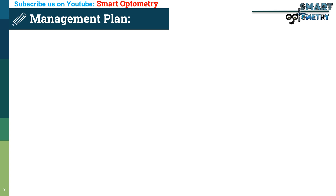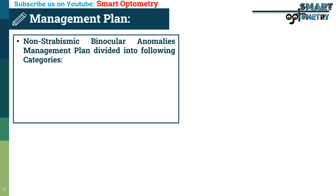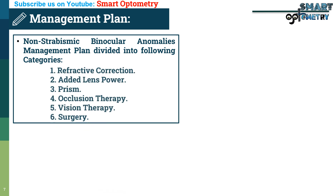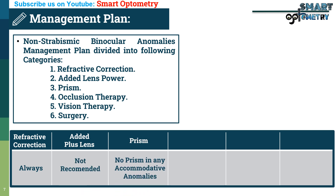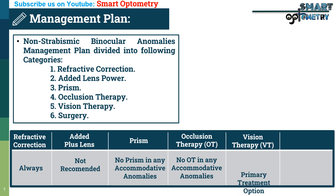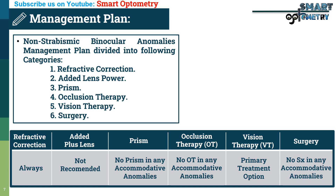Management plan for accommodative infacility: Refractive correction should always be given. Added plus lenses are not recommended. No prism is indicated in any accommodative anomaly. No occlusion therapy is used in any accommodative anomaly. Vision therapy is the primary treatment option for accommodative infacility. No surgery is indicated in any accommodative anomaly. Therefore, the management plan consists of refractive correction and vision therapy.